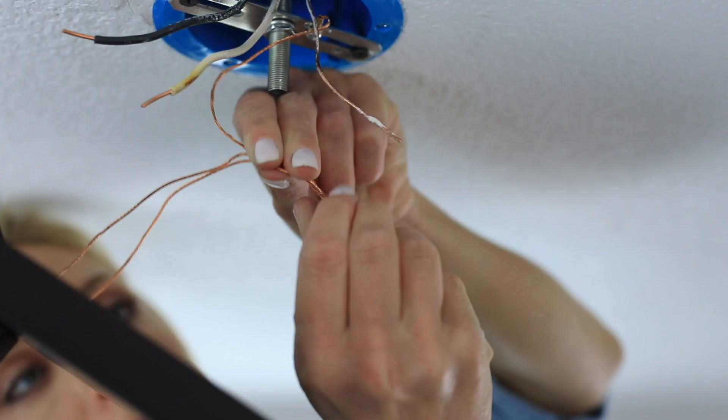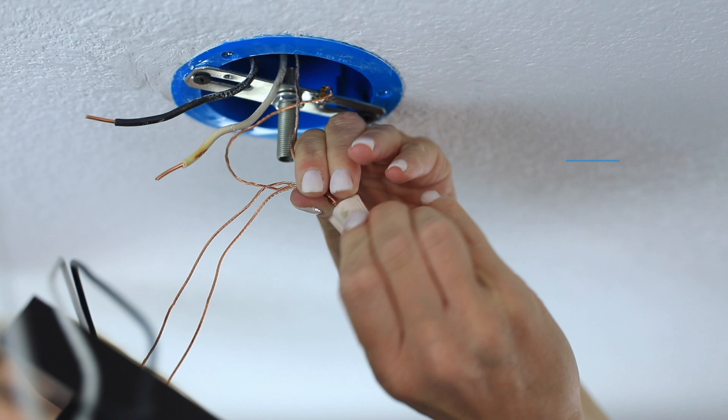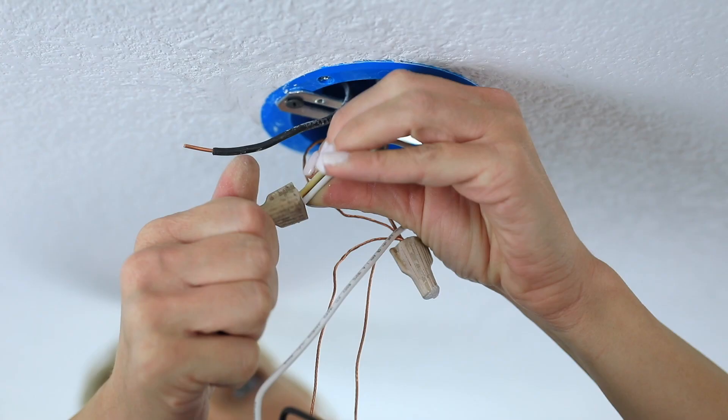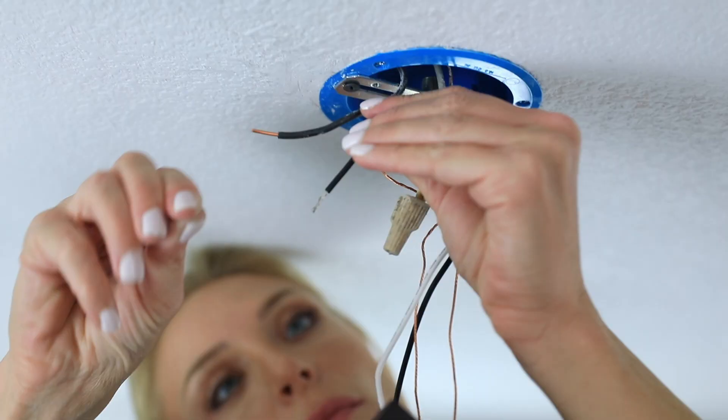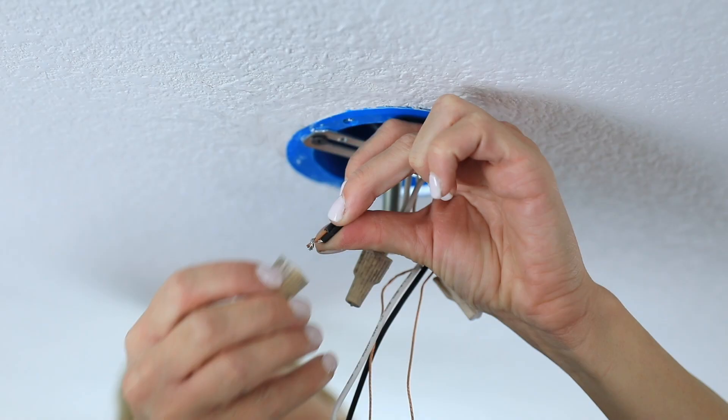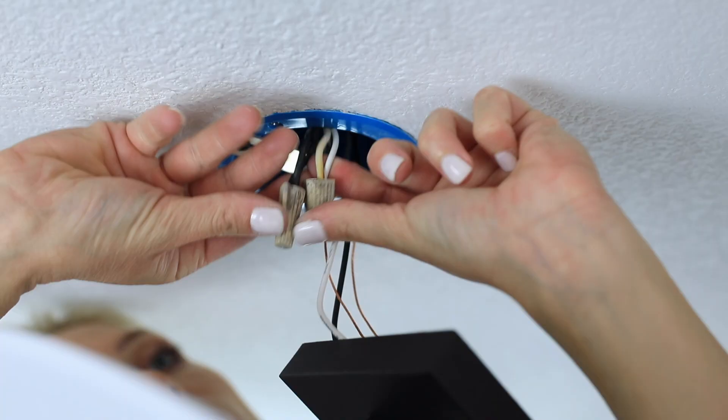Make all electrical connections. Cut wire to length, strip, and connect ground to ground, white to white, and black to black.